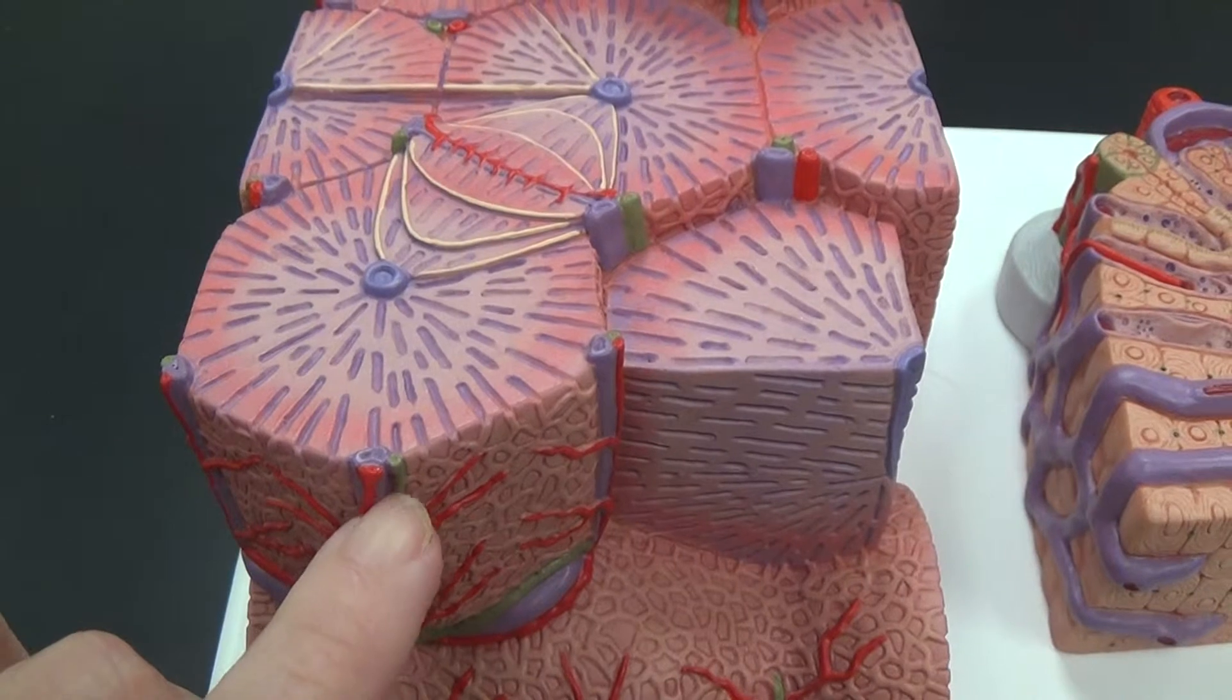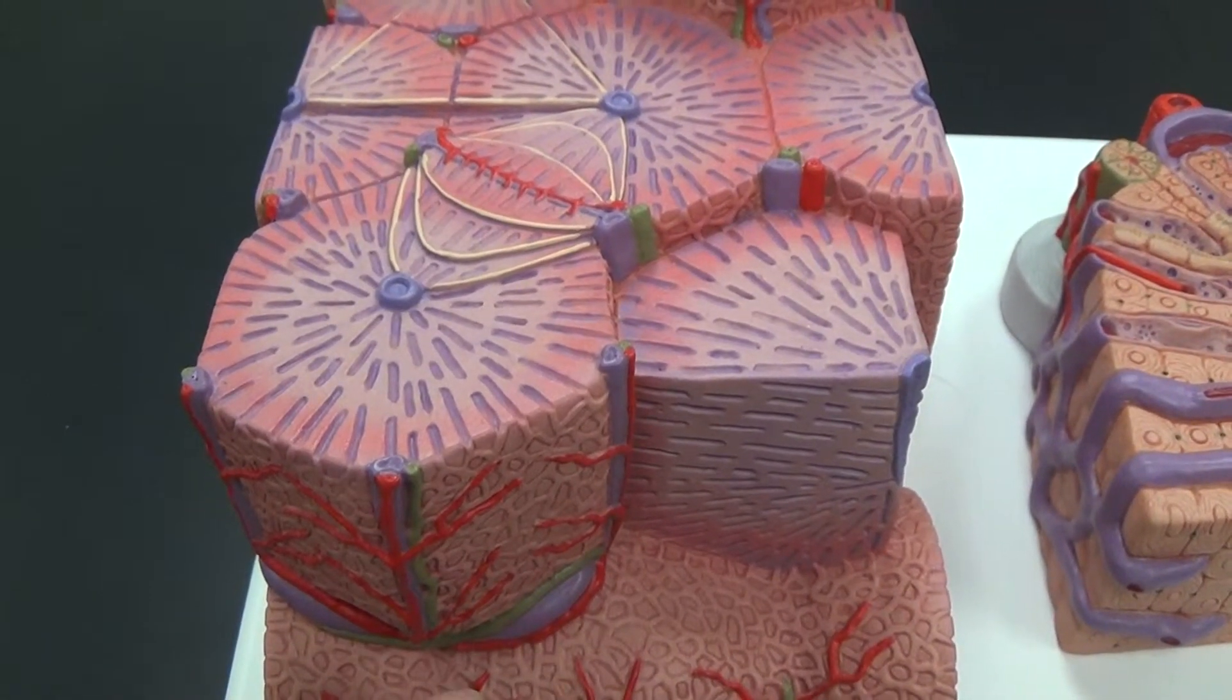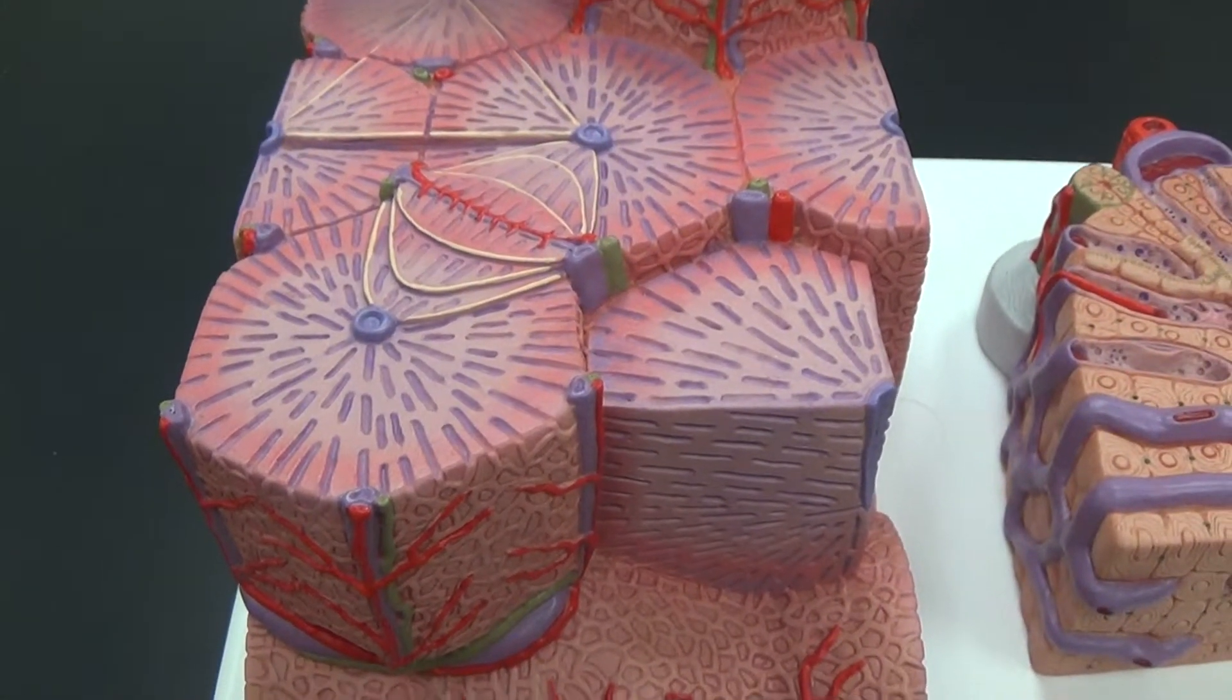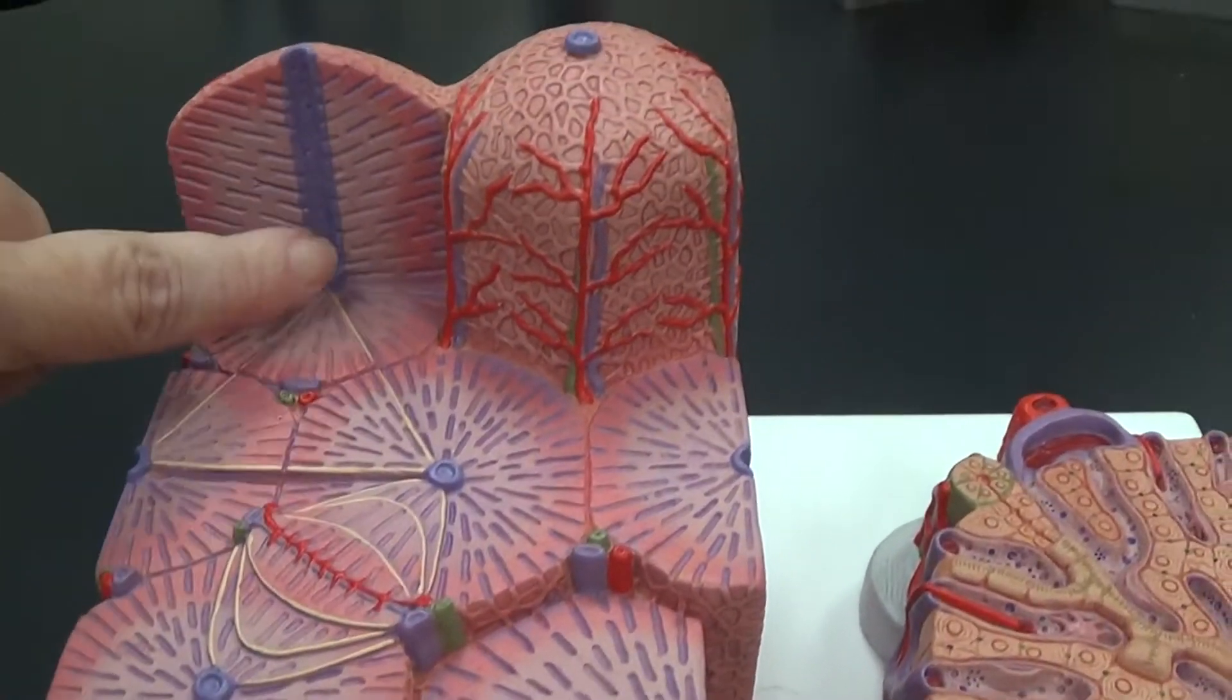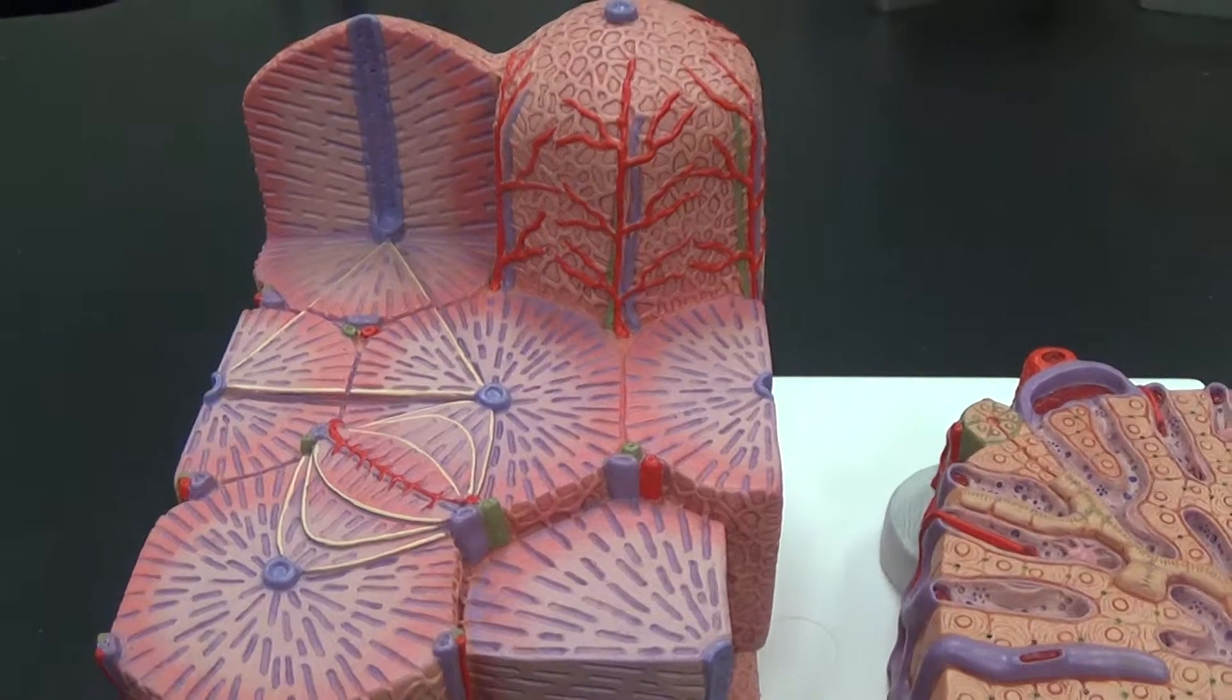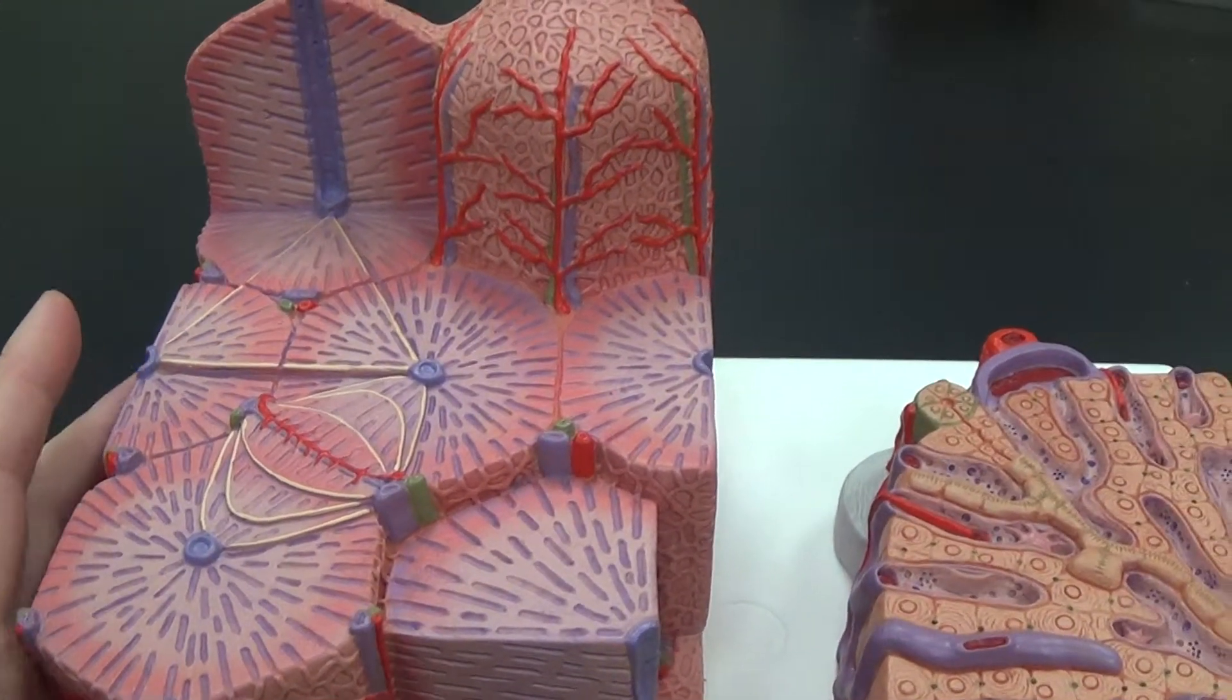Here we can see green, red, and purple, and we'll look at that more closely on the other side of this model in a moment. This purple in the center, that is the central vein. So we get the idea that there are many lobules within the liver.